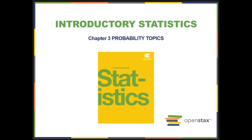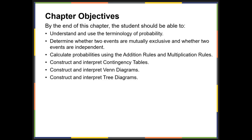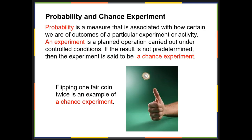We're going to take a look at Chapter 3: Probability Topics. The chapter objectives are listed in the beginning of the chapter. We start with terminology.